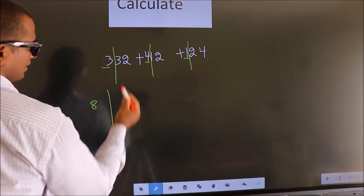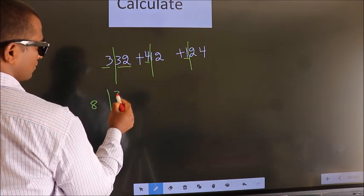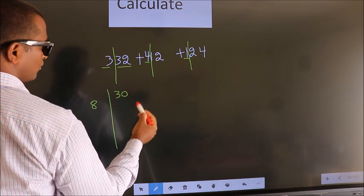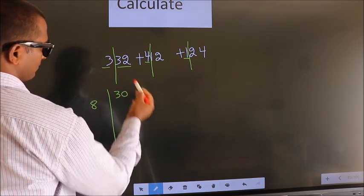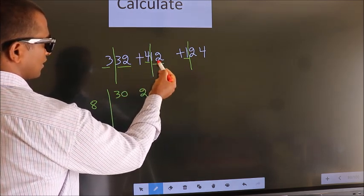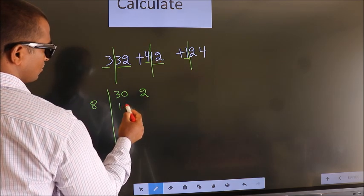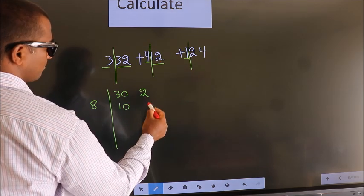Now 32, 32 is close to 30 and more by 2. Next number 12, 12 is close to 10 and more by 2.